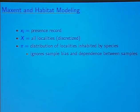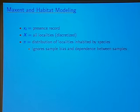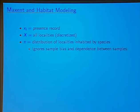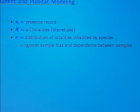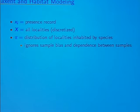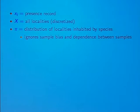How does this setup relate to the habitat modeling problem? The xi's are just the presence records. The space capital X is the space of all localities on the map — we're assuming the map has been discretized, so X is very large but finite, usually on the order of 10,000 to 100,000 points. Pi represents the true distribution of localities inhabited by the species.